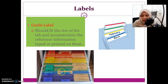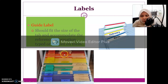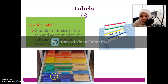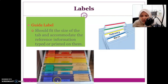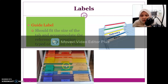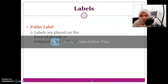Here you can see guide labels in different colors — purple, blue, green, yellow, and indigo. Each guide will have this label, and what is written on it is called the caption. For example, a caption might say 'Blog', 'Medical', 'Financial', 'Personal', or 'Home'.